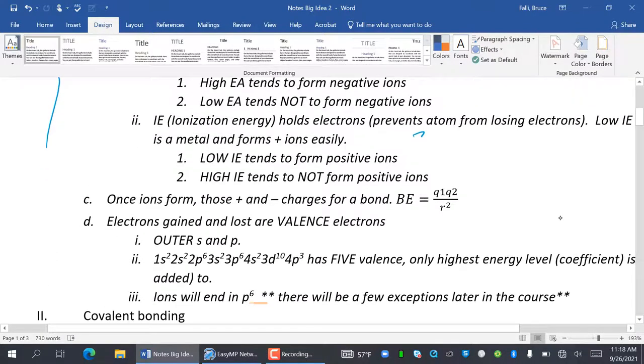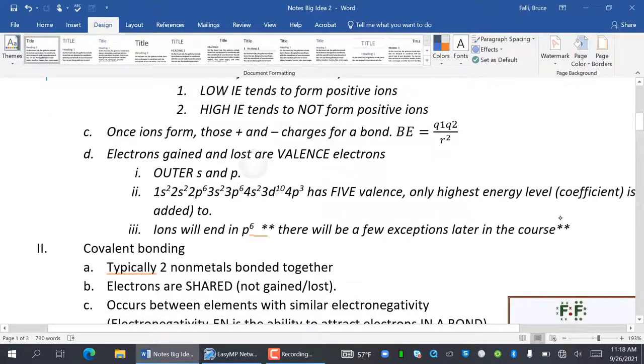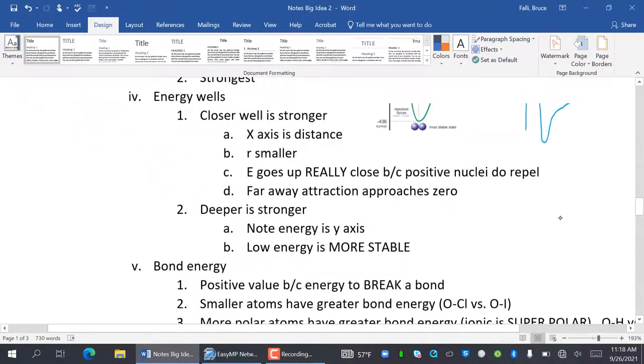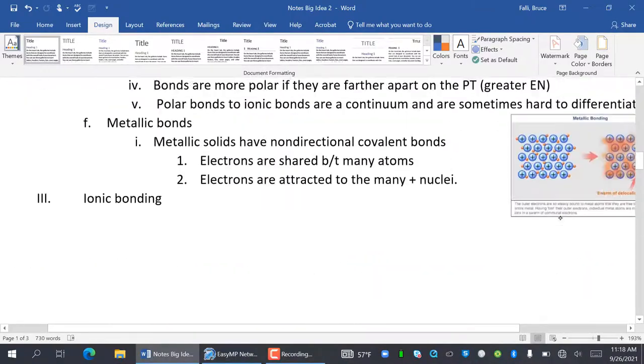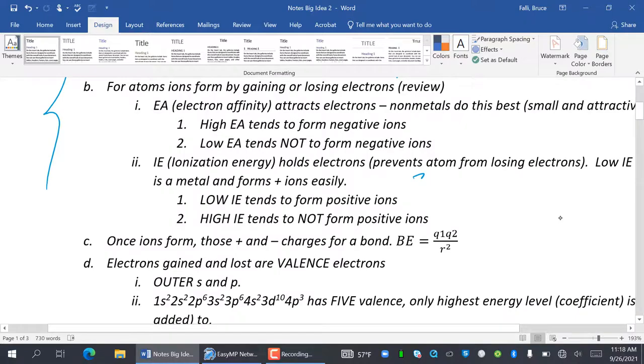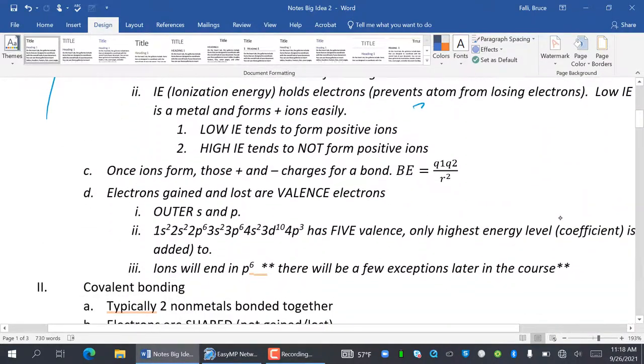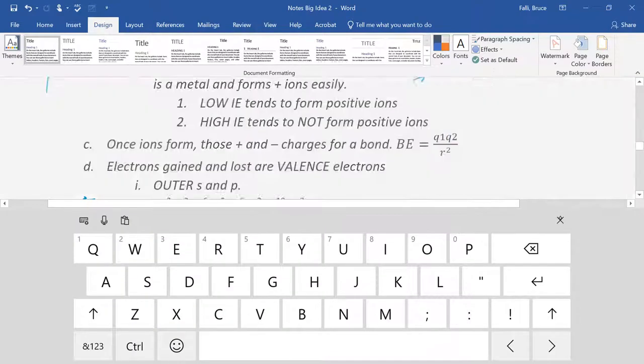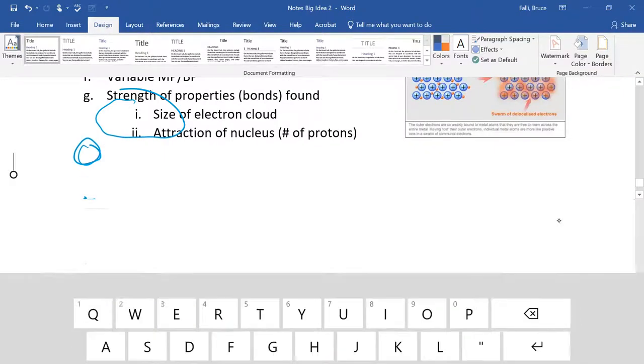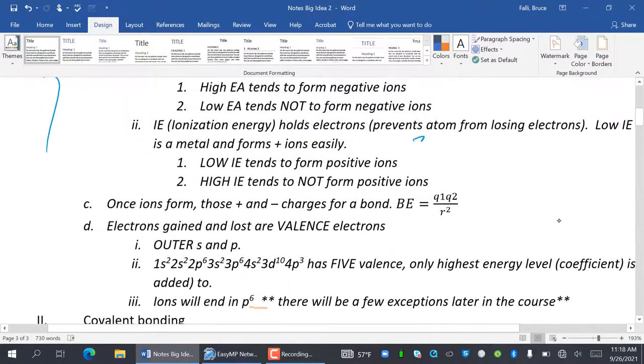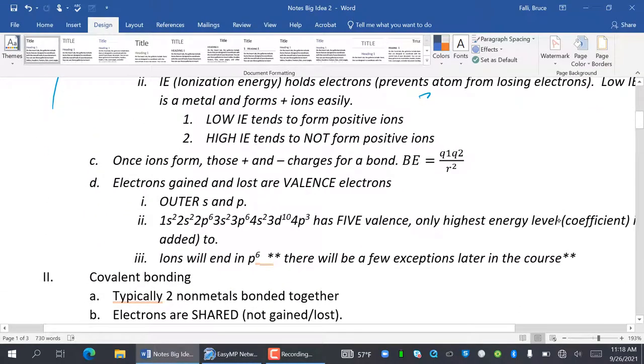So basically bonds form from these positive and negative charges. Electrons that are gained and lost are valence electrons. Are valence electrons. There are valence electrons, which are the outer S and P only.